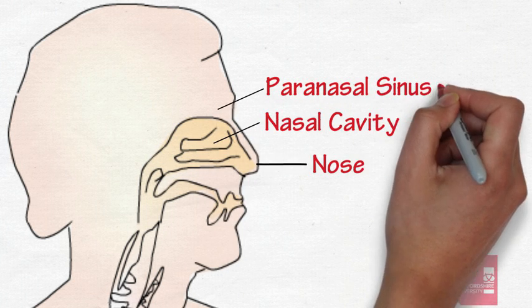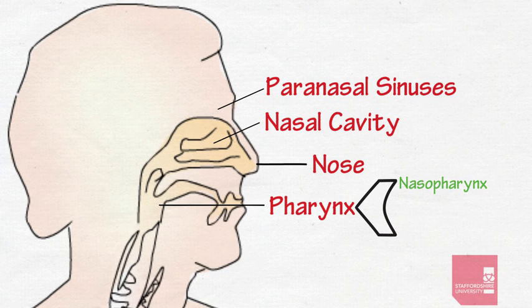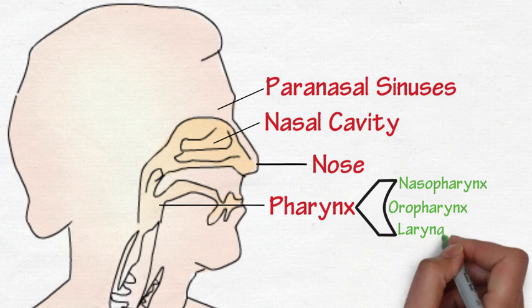paranasal sinuses and the pharynx, which is split into the nasopharynx, posterior to the nasal cavity, the oropharynx, posterior to the oral cavity and the laryngopharynx, just above the larynx.